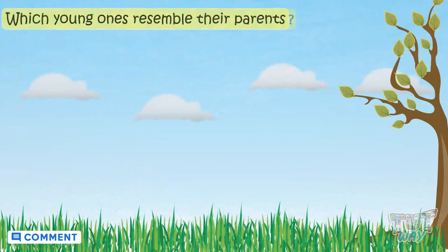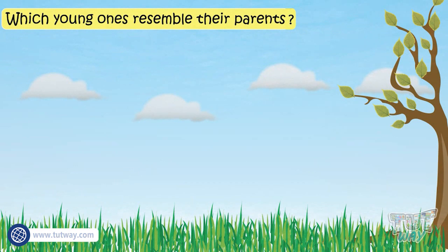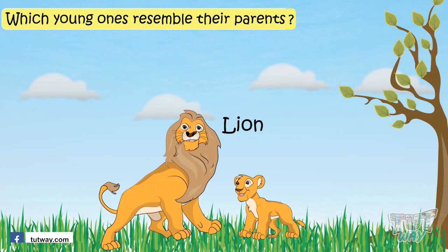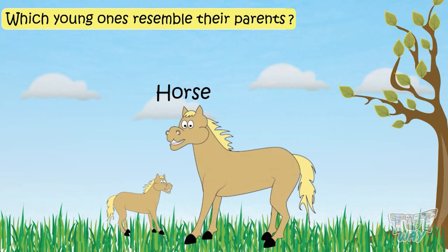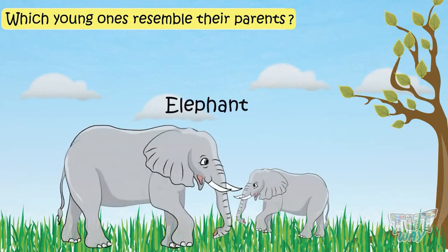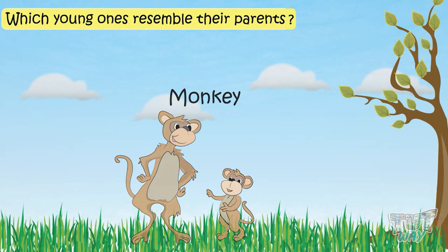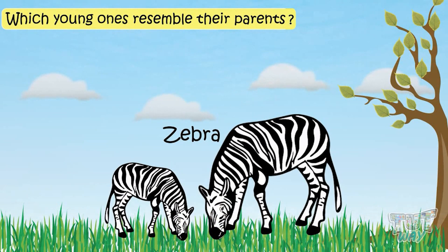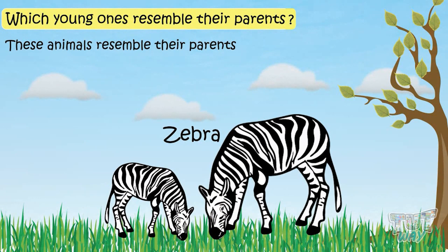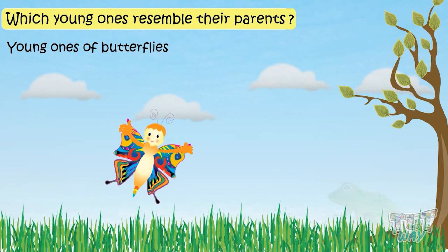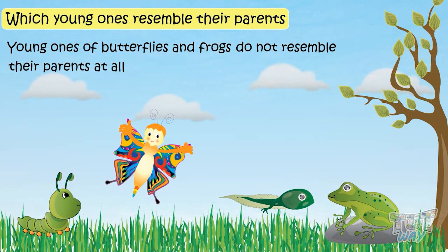Now let's see which young ones resemble their parents. Animals like lions, cats, horses, tigers, elephants, monkeys, zebras, and many more have young ones that resemble their parents at the time of birth. However, the young ones of butterflies and frogs do not resemble their parents at all.